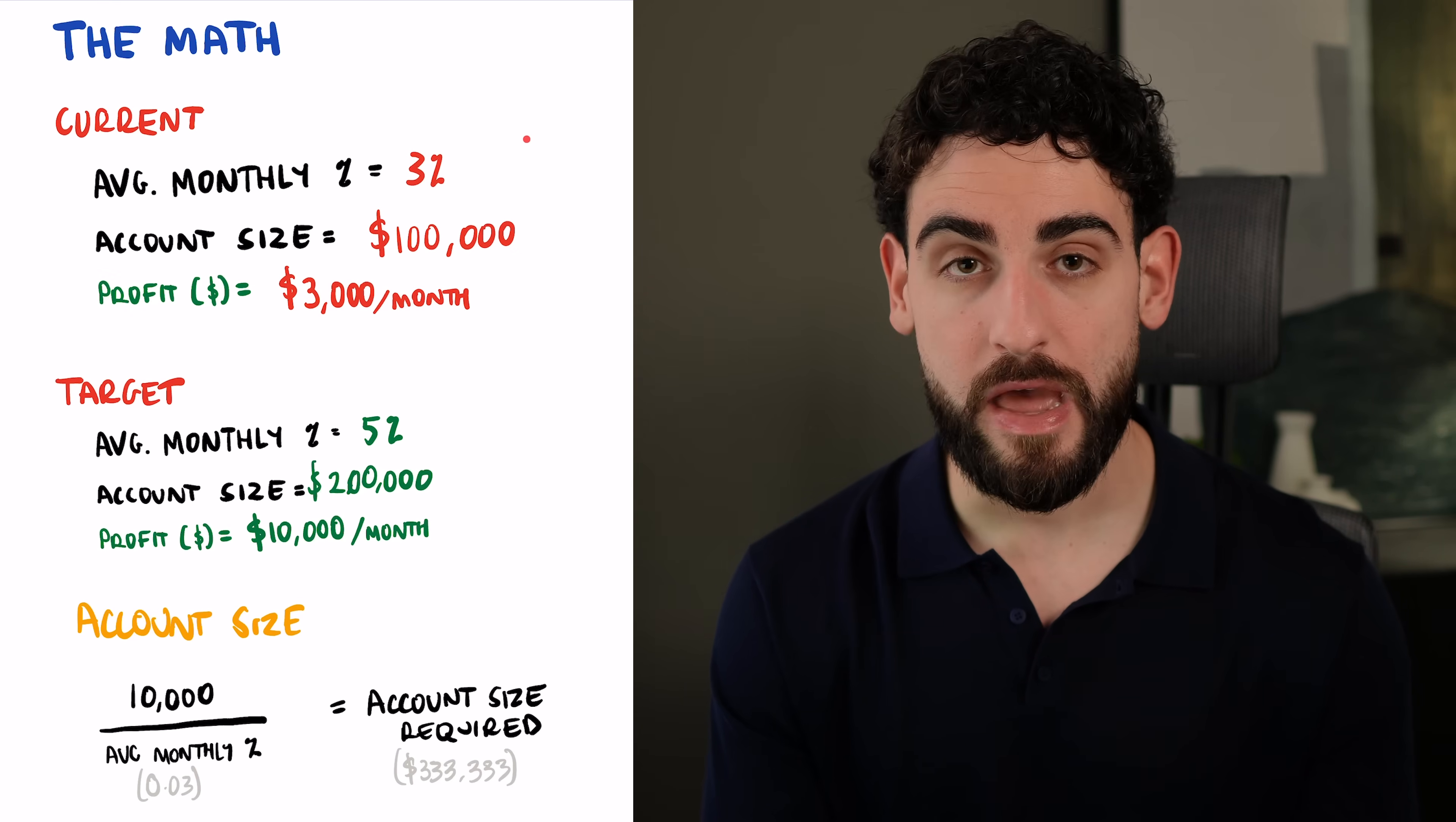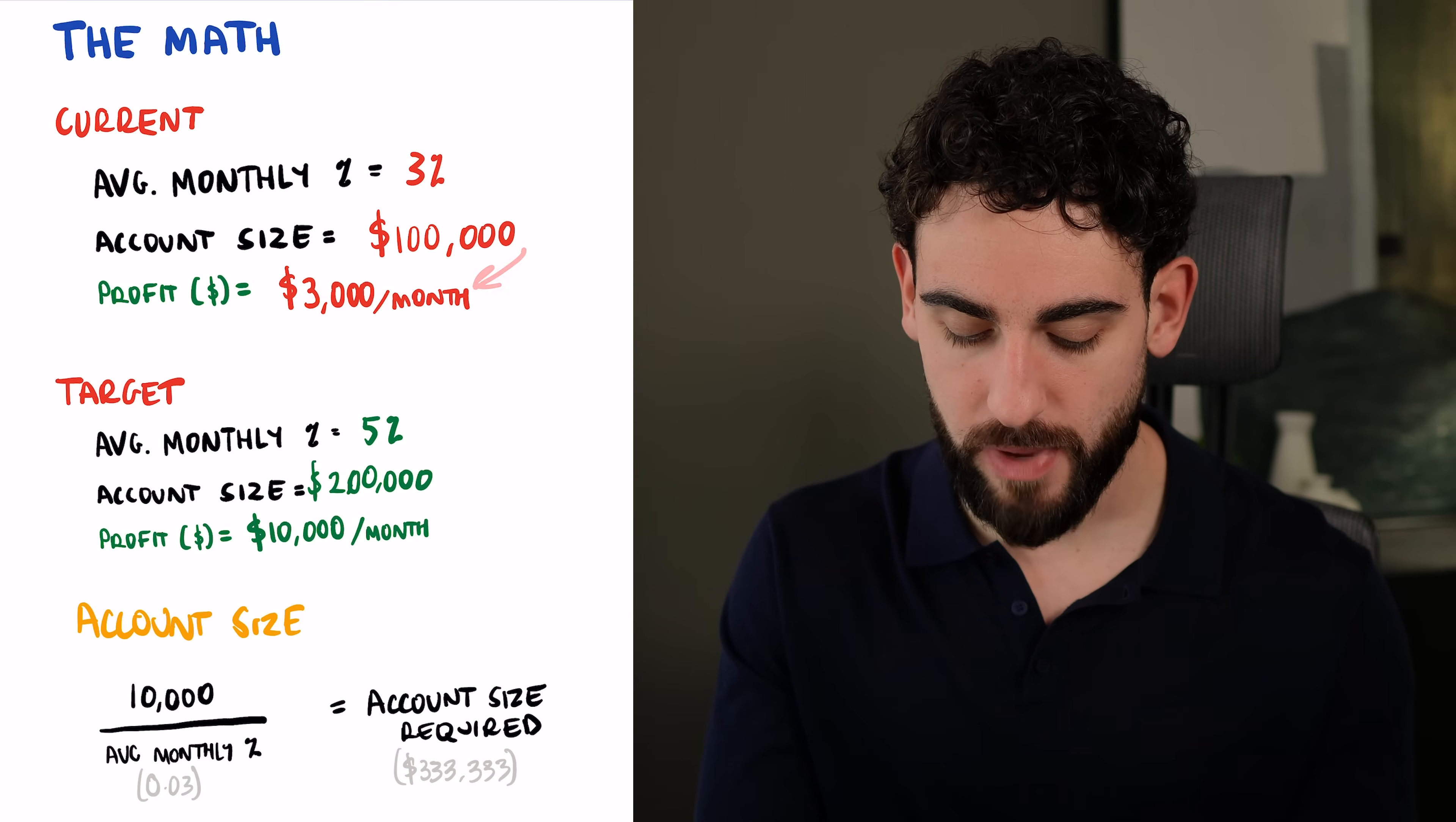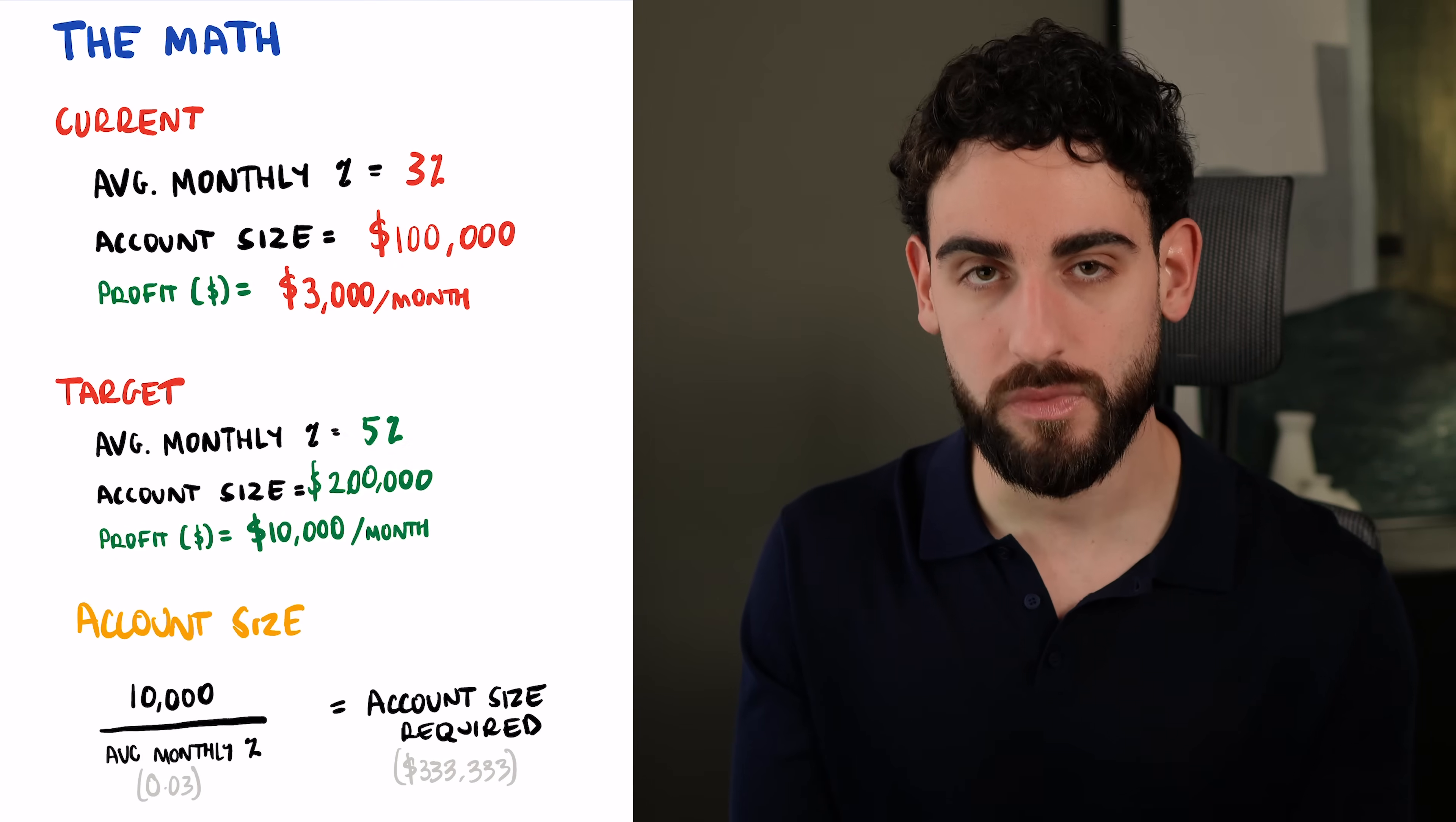And to be fair, that type of access to capital is not that difficult to get access to nowadays. There are so many options for that. But what I want you to start by doing, and you can even pause the video and do it right now, is get an idea of your math, figure out your average monthly returns, have a look at your account size, and then figure out how much you're making in profit. And then figure out what's the target and what account size do you need using this formula.